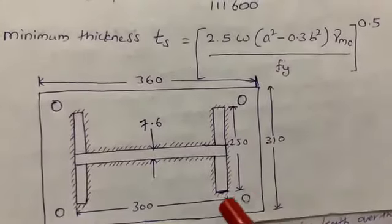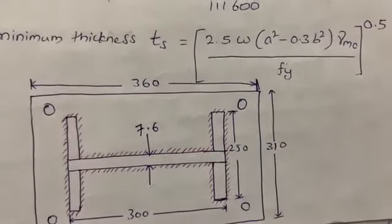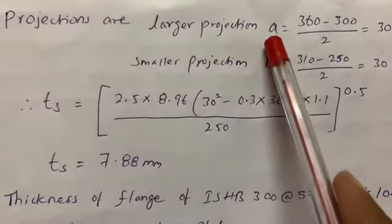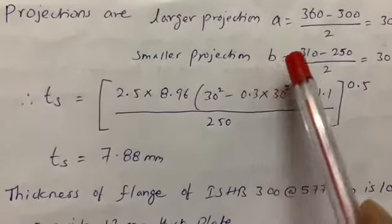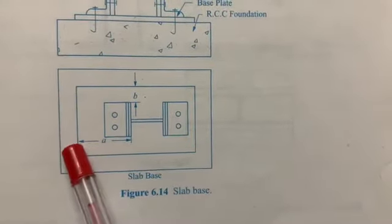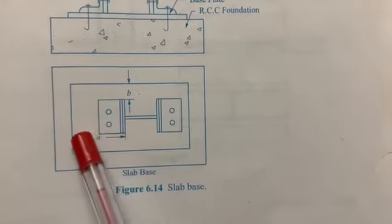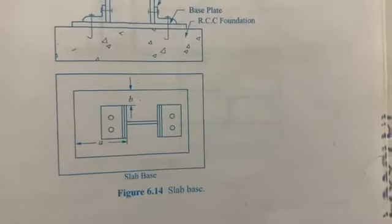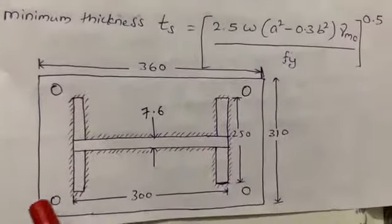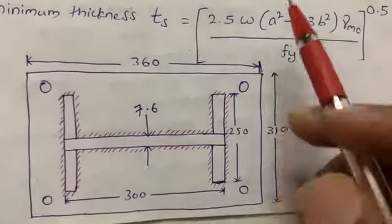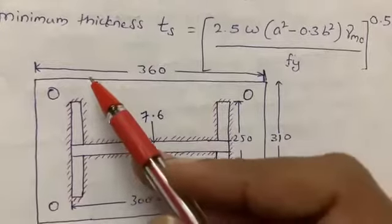In the formula, 'a' is the larger projection and 'b' is the smaller projection. The larger projection 'a' is the distance from the plate edge to the I-section flange edge on the longer side. The smaller projection 'b' is the distance from the plate edge to the I-section edge on the shorter side.